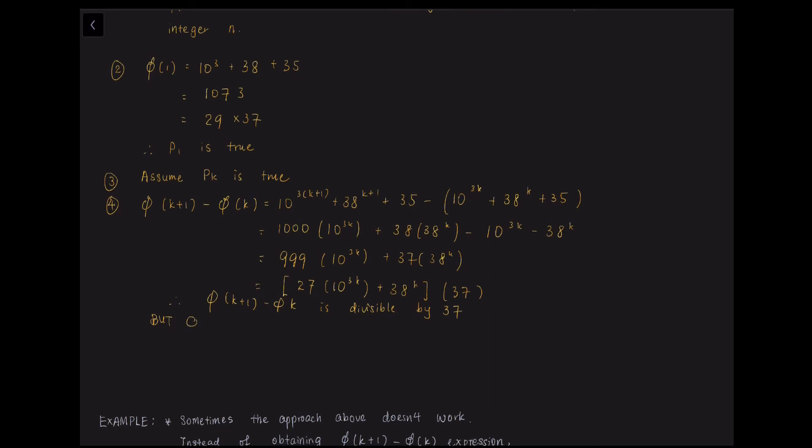But we also know that just now we have assumed that P(K) is true. So φ(K) is definitely divisible by 37. So since it is divisible by 37, it must be for the φ(K+1) divisible by 37 as well. So we know that now, in this case, P(K+1) must be true.